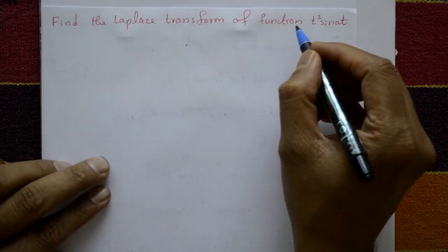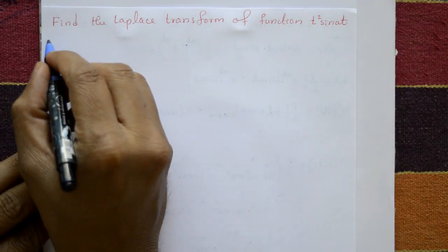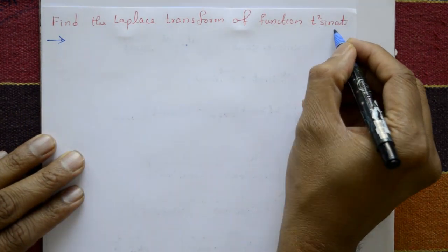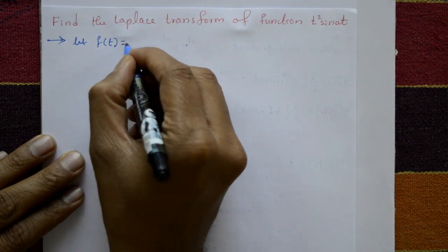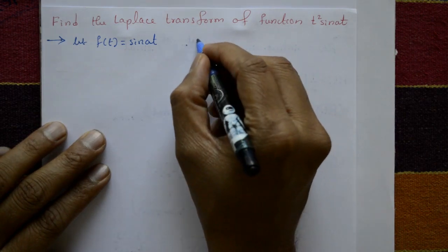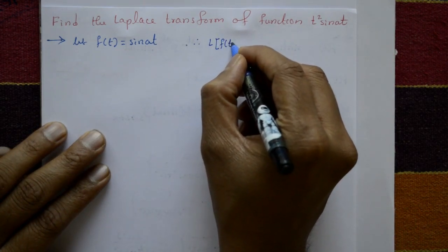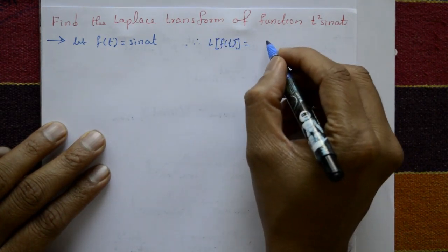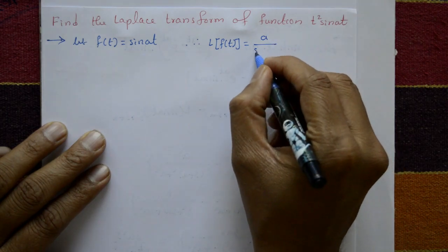Find the Laplace transform of t² sin(at). Let f(t) = sin(at). Using the standard Laplace transform result, the Laplace of sin(at) is a divided by s² plus a².